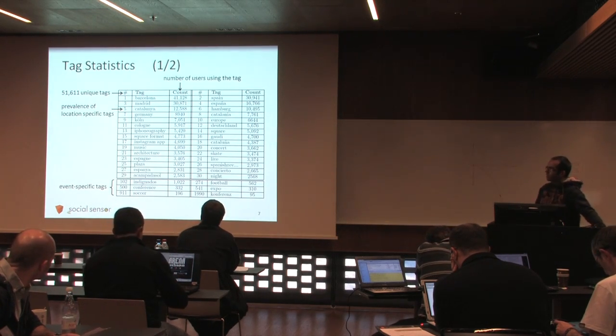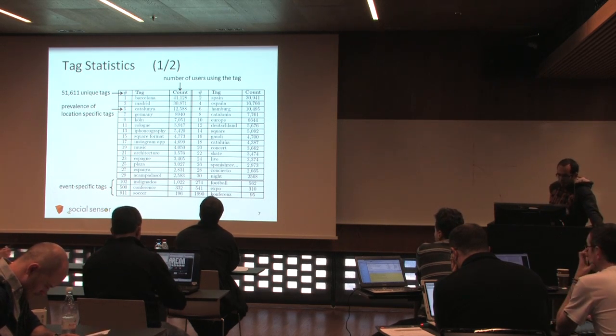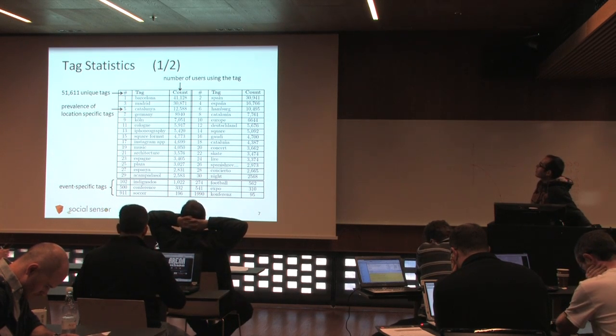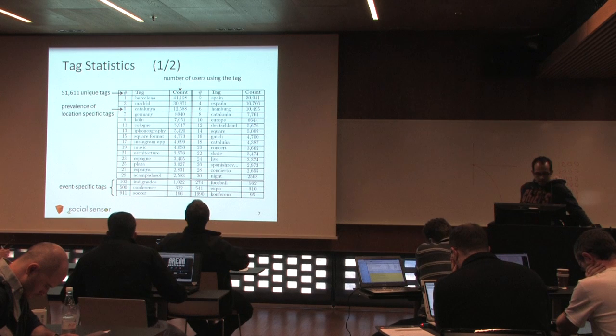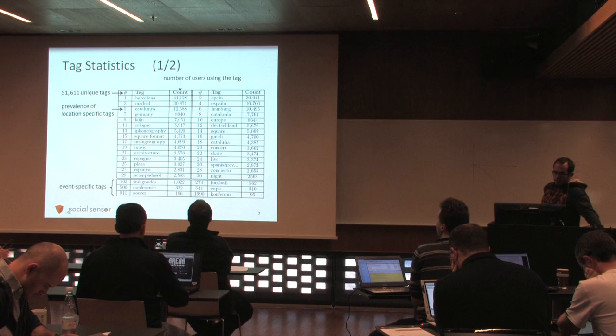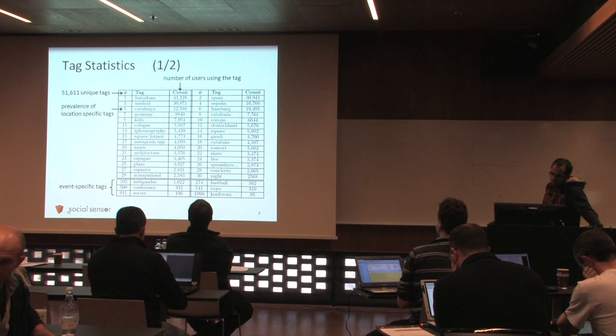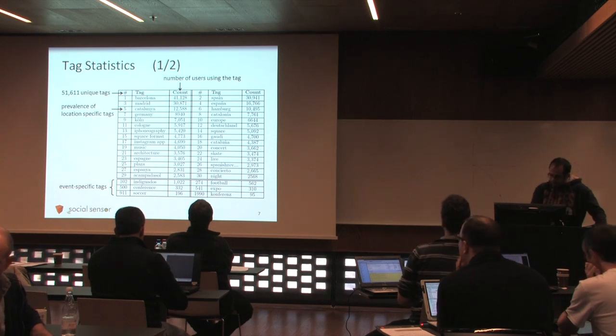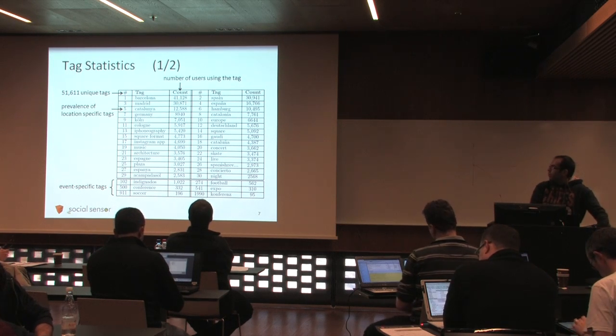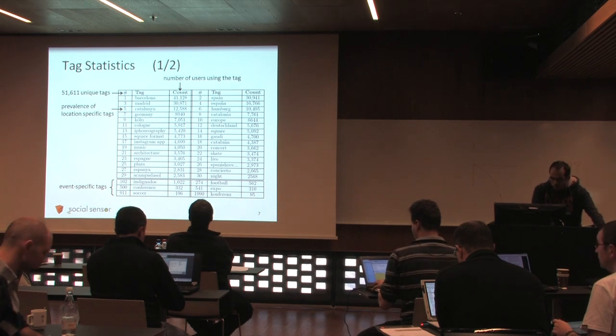Now I will provide some statistics on the dataset. The tags here are the most frequent tags. In total, there are more than 50,000 unique tags. The most frequent ones, as you can see, are related to locations: Barcelona, Spain, Madrid, Spania, Catalonia, and so on. There are also event-specific tags which can be very helpful to recognize the events, for instance: Indignados, football, conference, expo, and so on.